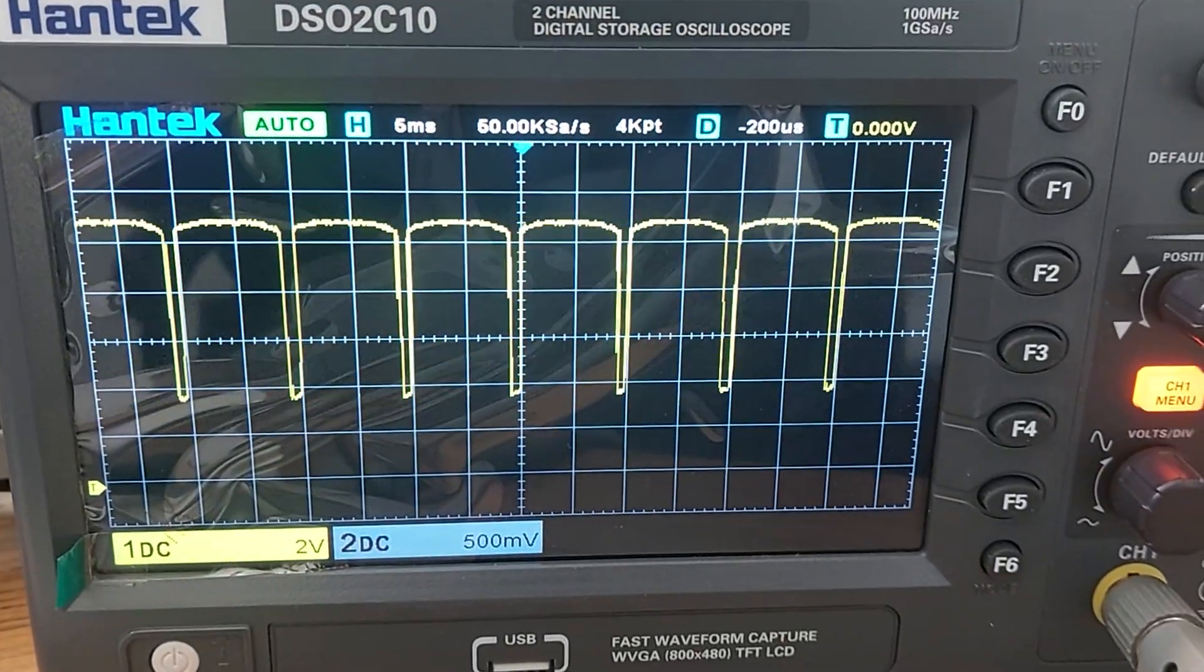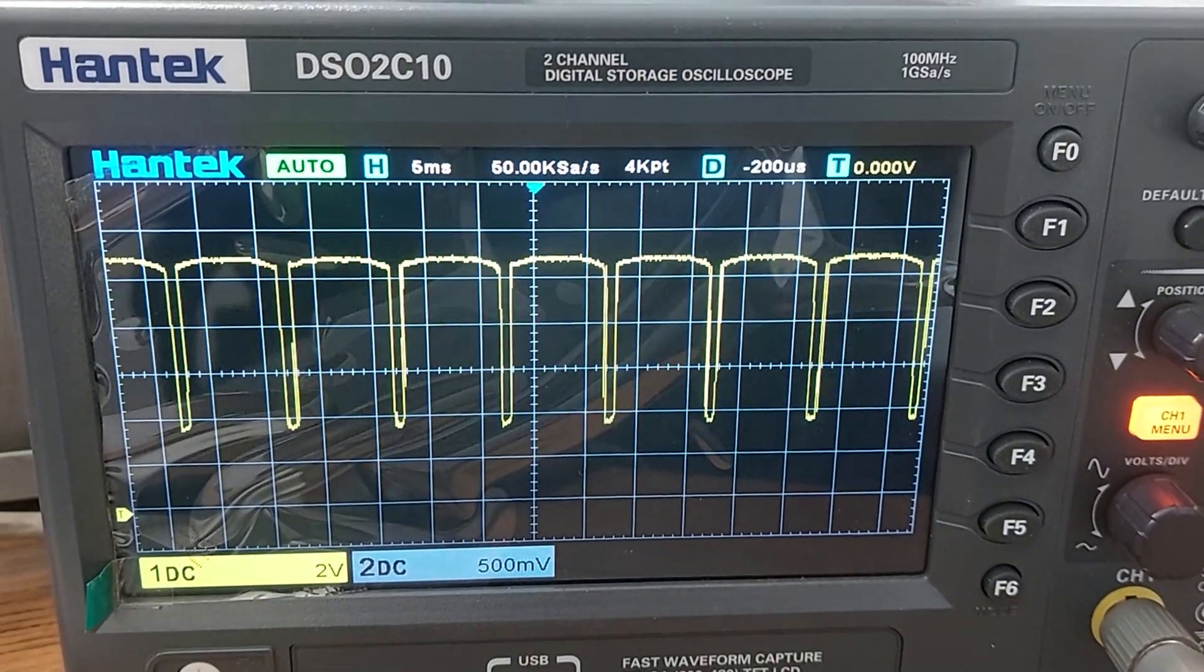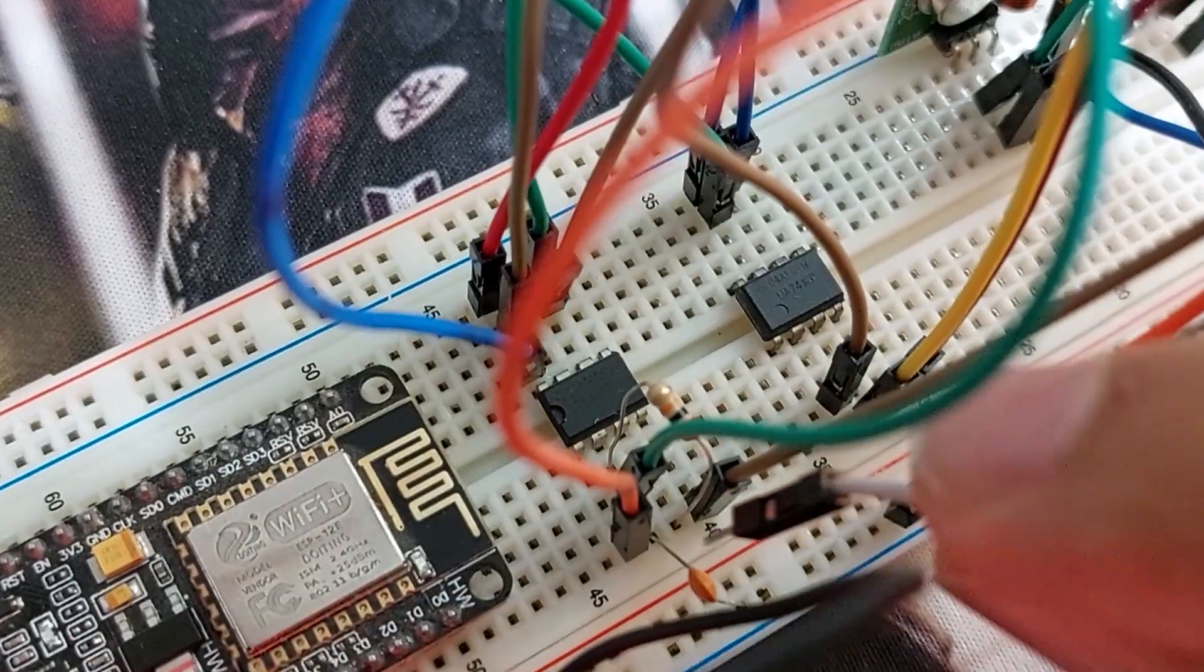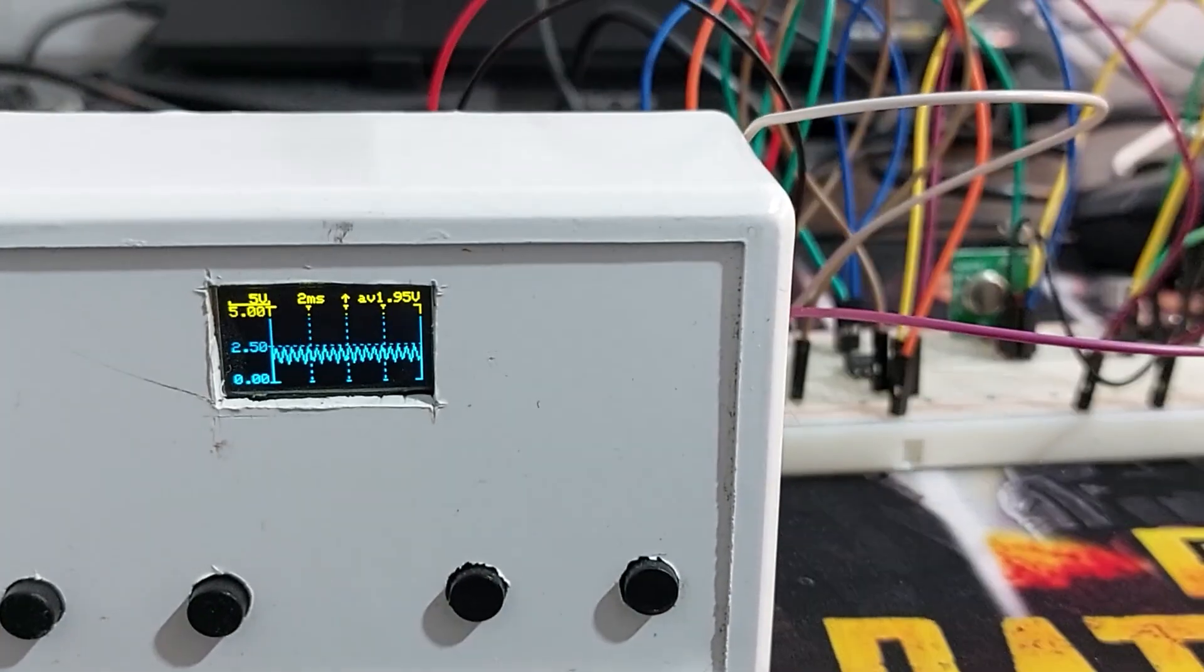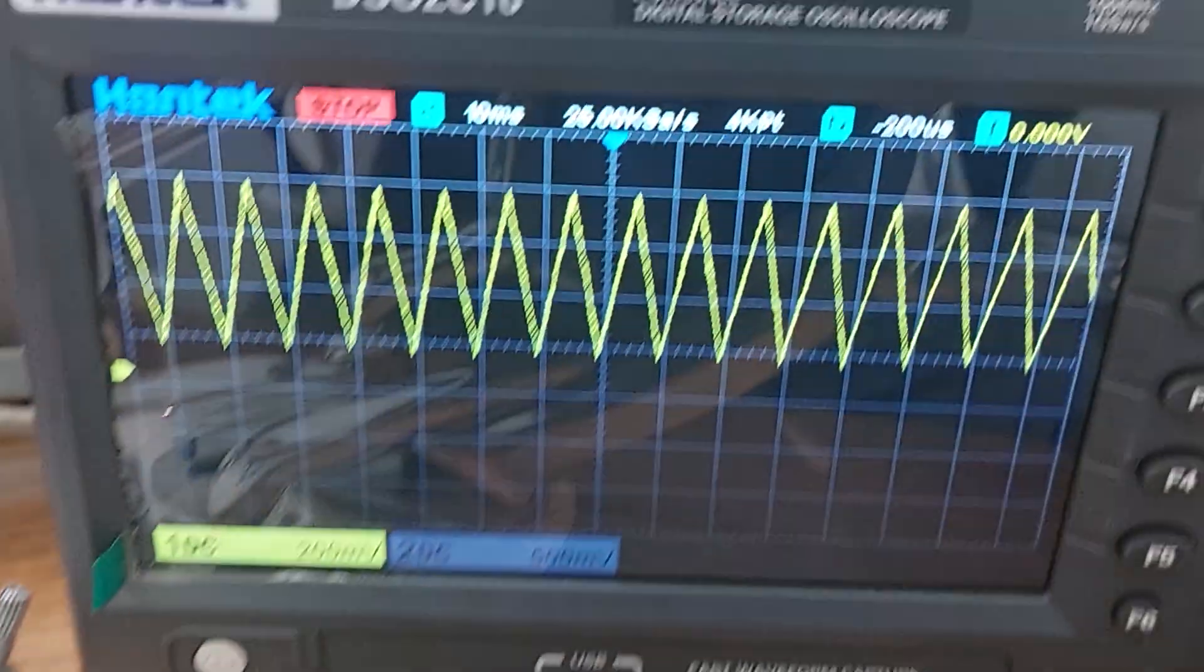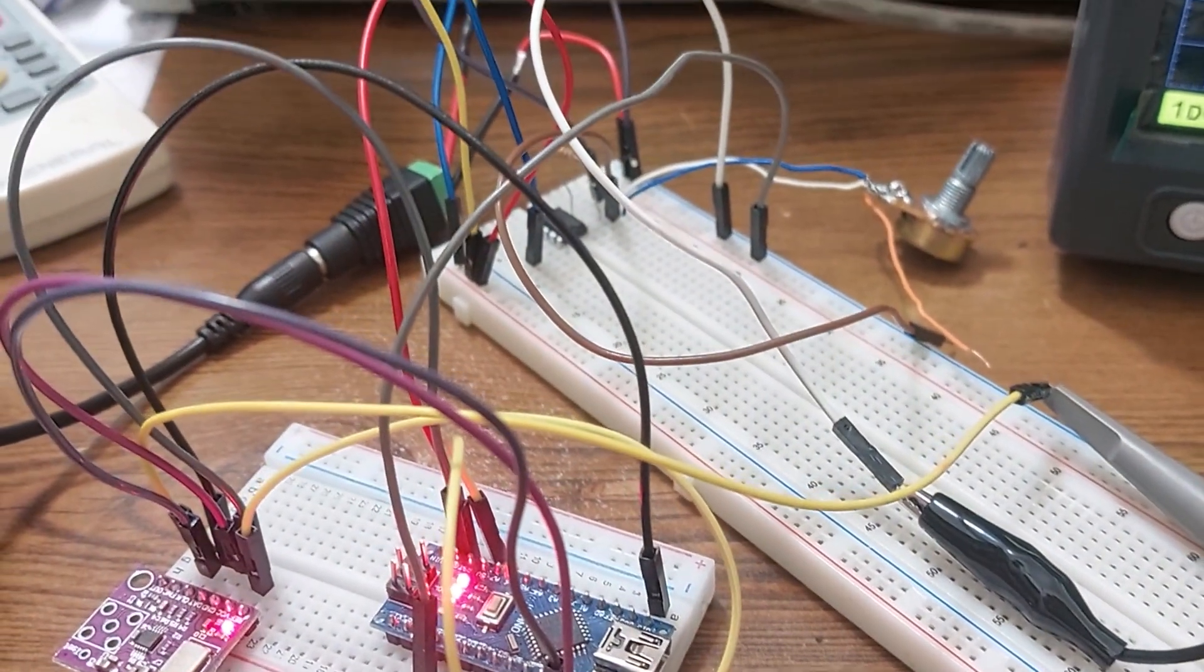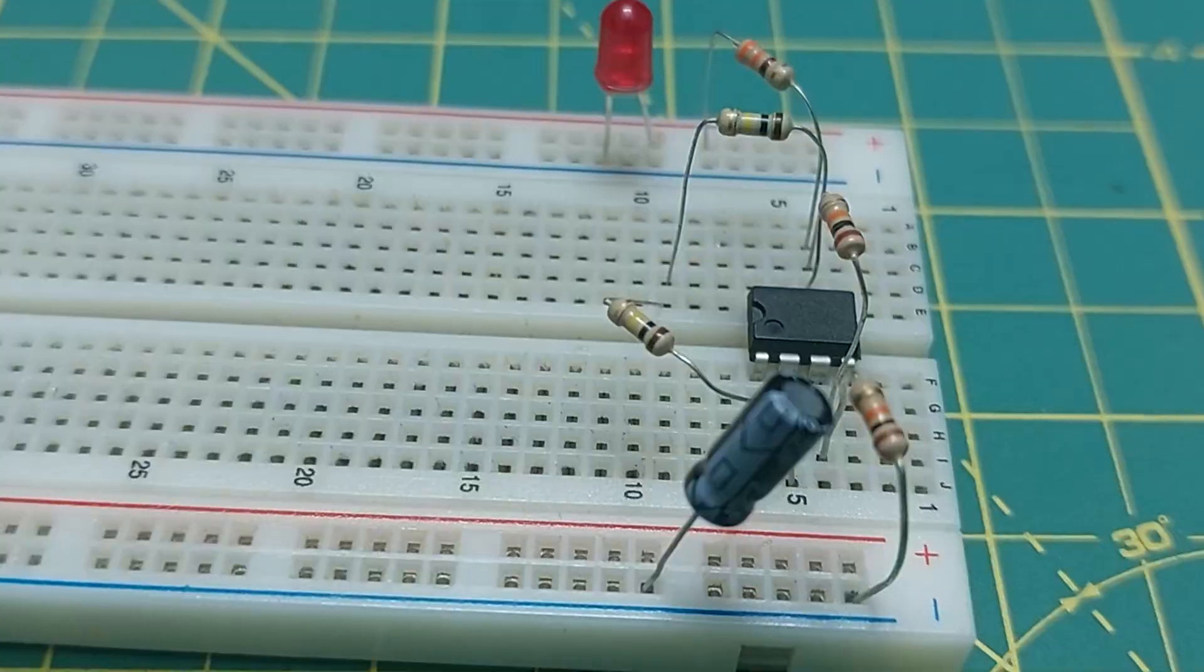One way is to check the input and output signals using an oscilloscope. In some cases, you'll also need a signal generator to feed signals into the circuit. But here's the problem. These tools are expensive, and not everyone has the knowledge to use them properly. So, what's the solution?